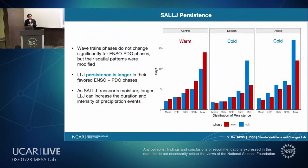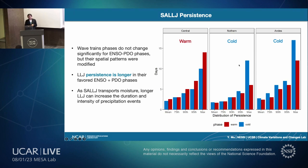Although the wavetrain phases don't change significantly for different ENSO-PDO phases, their spatial patterns are modified. We found that the low-level jet persists longer in their favored ENSO-PDO phases: central persists longer in warm phases, while northern and Andes persist longer in cold phases. Because the low-level jet transports moisture, if it persists longer it can lead to longer and more intense rainfall events — what we call precipitation extremes.